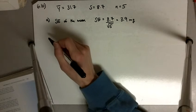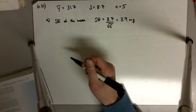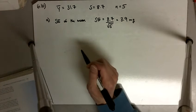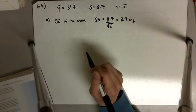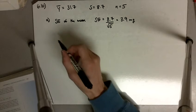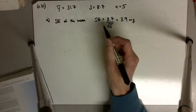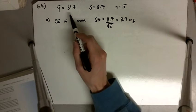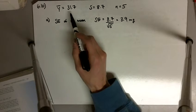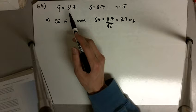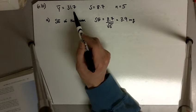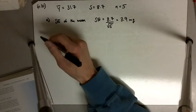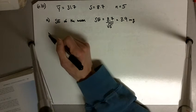That's the standard error — it tells us how uncertain we are regarding our sample mean as an estimate of the population mean.